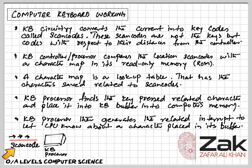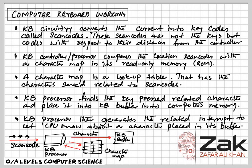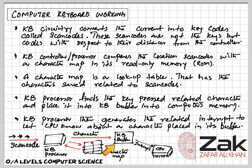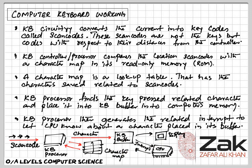To summarize: a scan code comes in and the keyboard processor senses it, then compares the scan code with the character in the character map. That character is then sent to the keyboard buffer in the computer's memory. The interrupt then tells the microprocessor that a character related to the key pressed has arrived and is now in the keyboard buffer. The processor acts on that data and the key is then displayed on the monitor. That's it about the working of a keyboard.